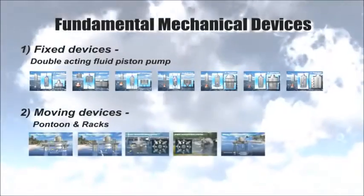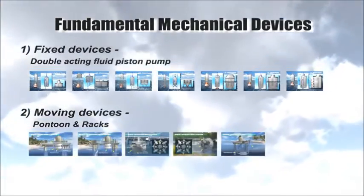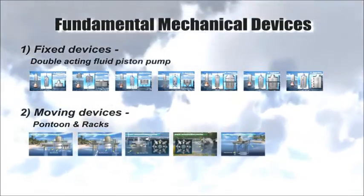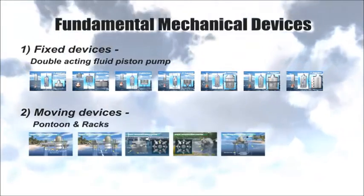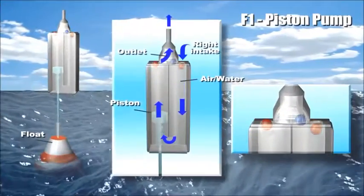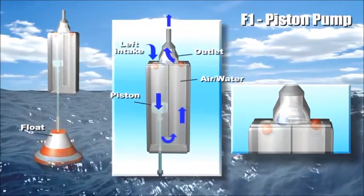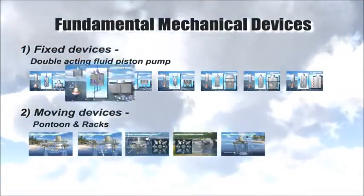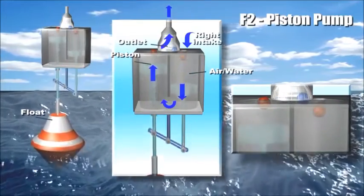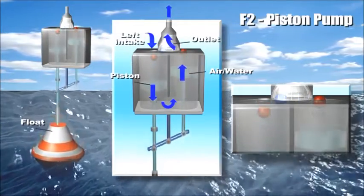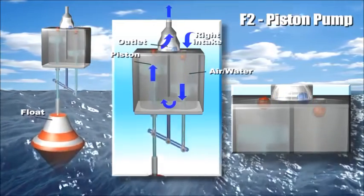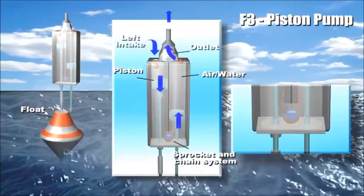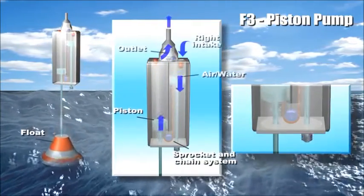The two fundamental mechanical devices are the movable device and the fixed device. In the double-acting piston pump, a piston is arranged to reciprocate as its piston rod is actuated by a float. When the float moves up as a rising wave passes, it pushes the piston upward, the resulting dynamic flow closes the left inlet by the ball, and fluid is pumped out through the center top outlet. At the same time, it causes fluid to flow through the right-hand inlet into the chamber.